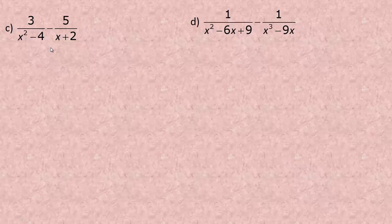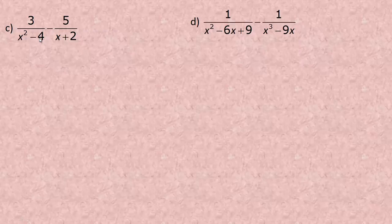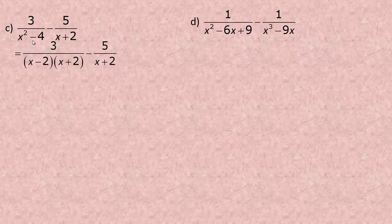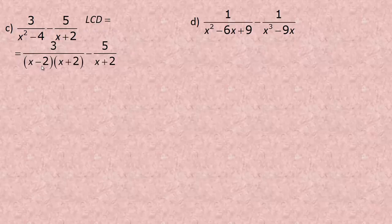Now we get into binomial and trinomial denominators. One denominator is x plus 2, which doesn't factor further. The other is x squared minus 4, which is a difference of two perfect squares — x squared and 2 squared — so it factors into x plus 2 and x minus 2. Both denominators have an x plus 2 factor, and we also need the x minus 2 factor, so the LCD is x plus 2 times x minus 2.